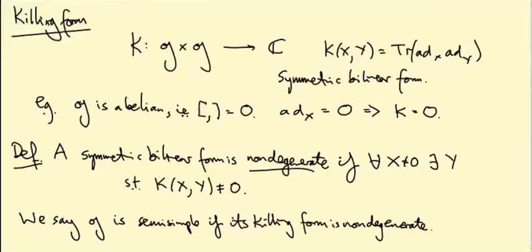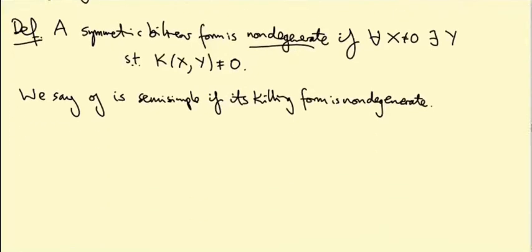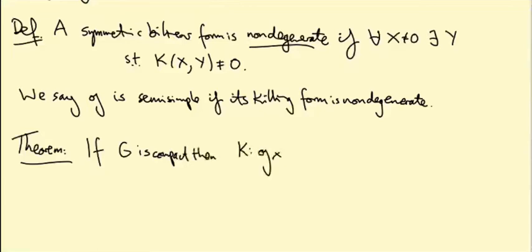So we will focus on semi-simple things in what follows. We're also going to be focusing on the Lie algebras of compact groups. And there's something special about the killing form for those. So here's a theorem that I won't prove in this video, maybe in a later video. The theorem says if G is compact, then the killing form is a real valued form in this case, and it's actually negative semi-definite.